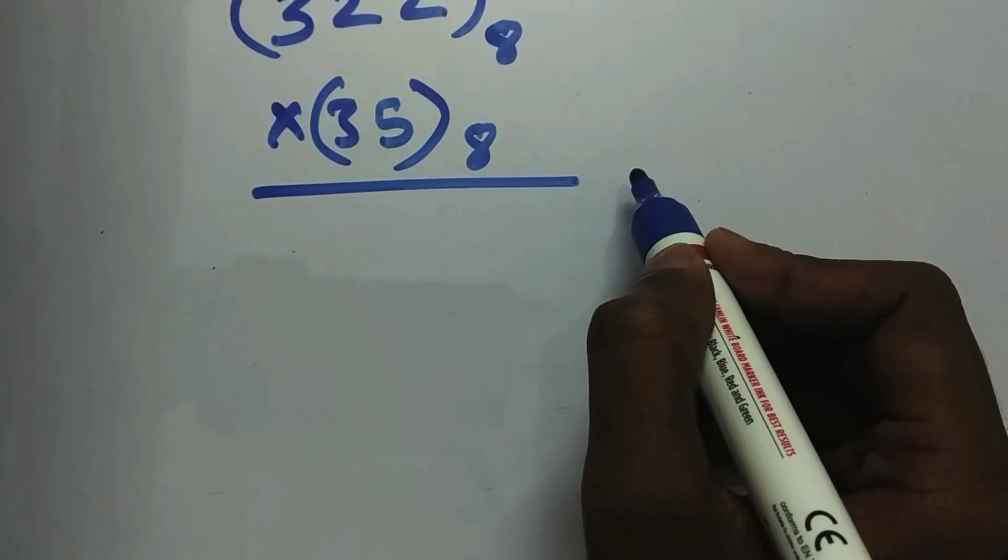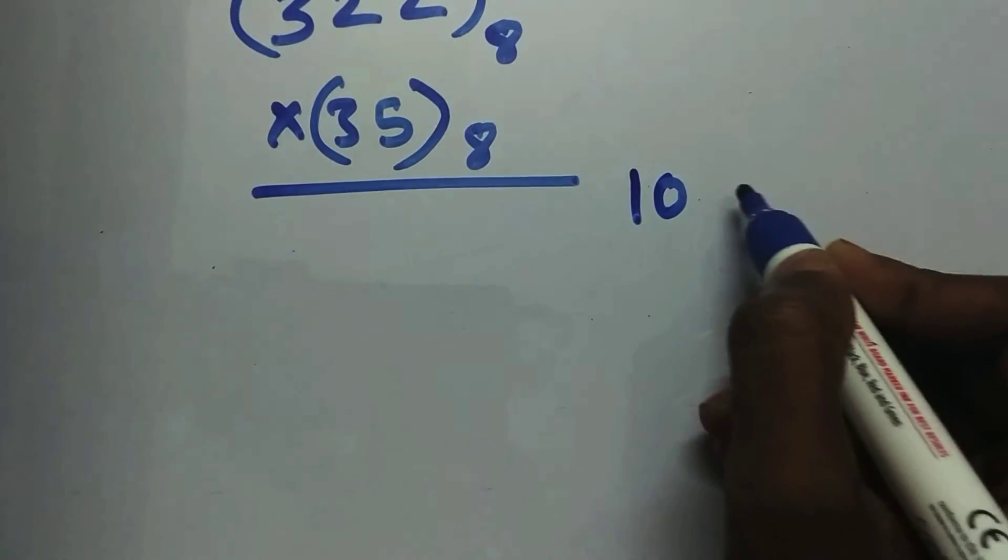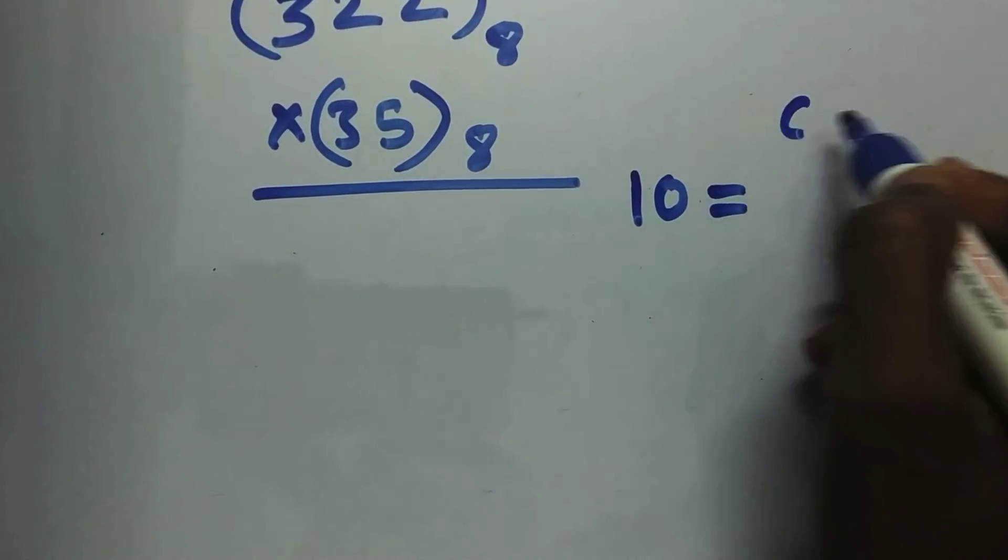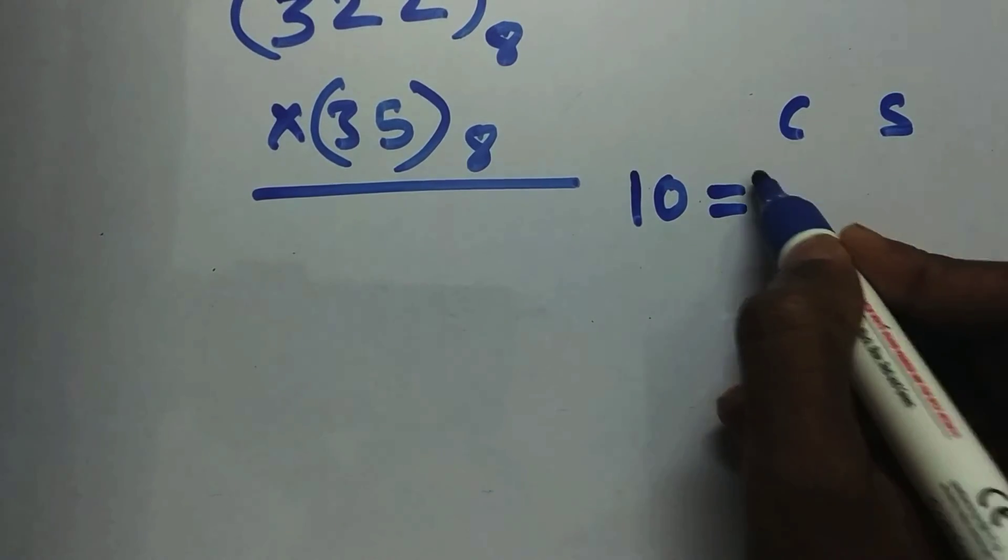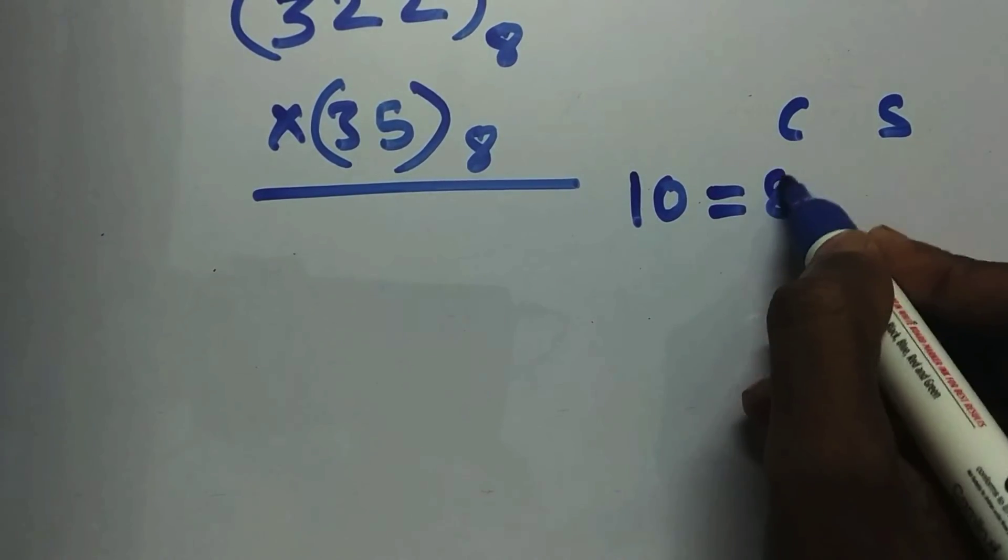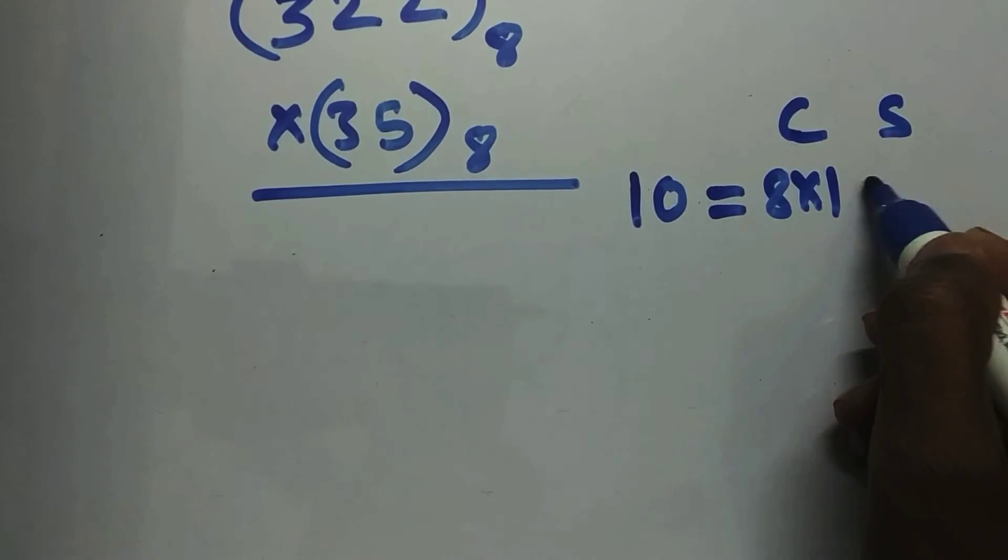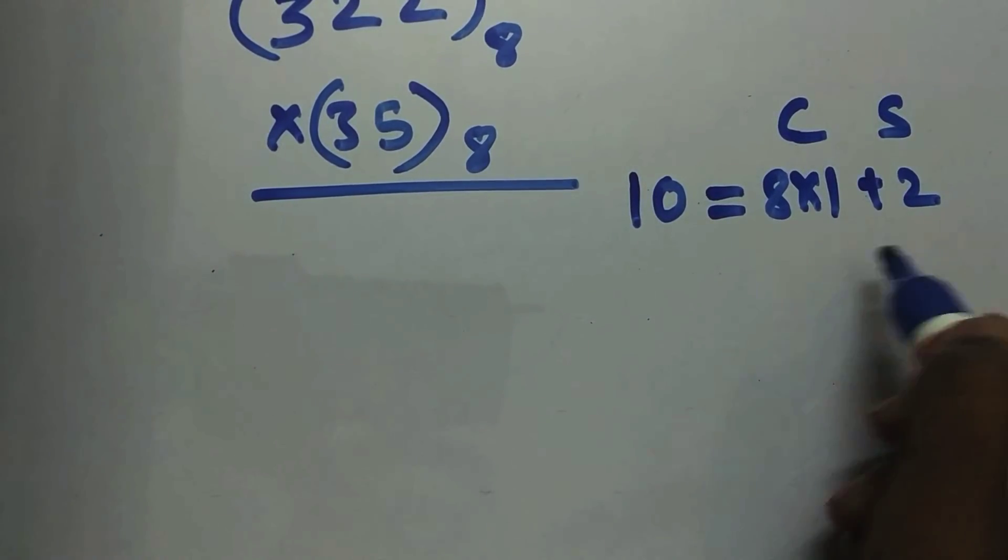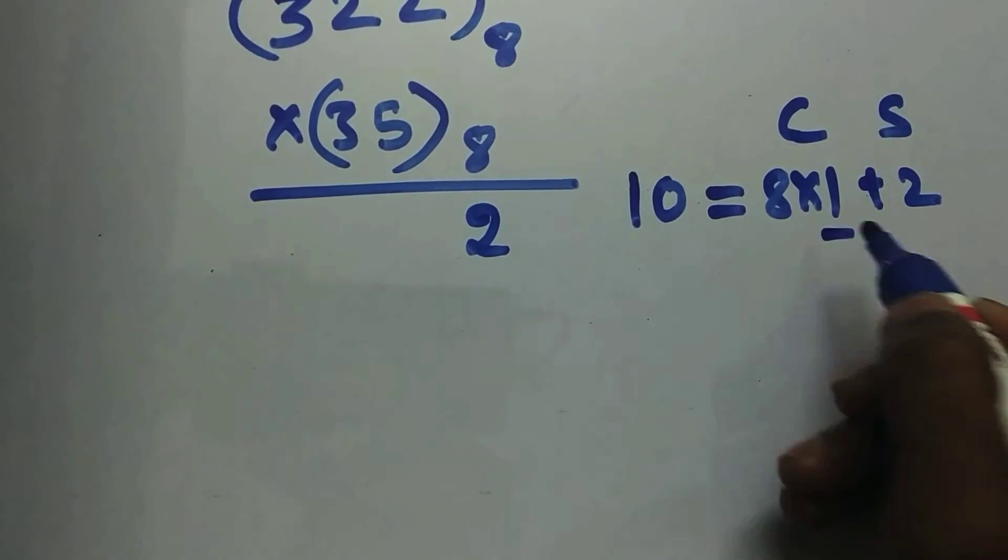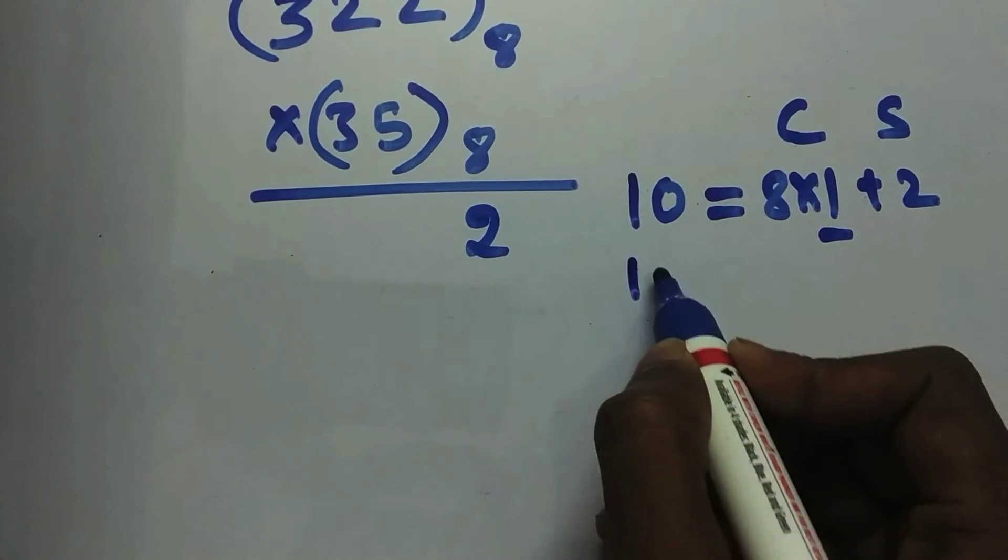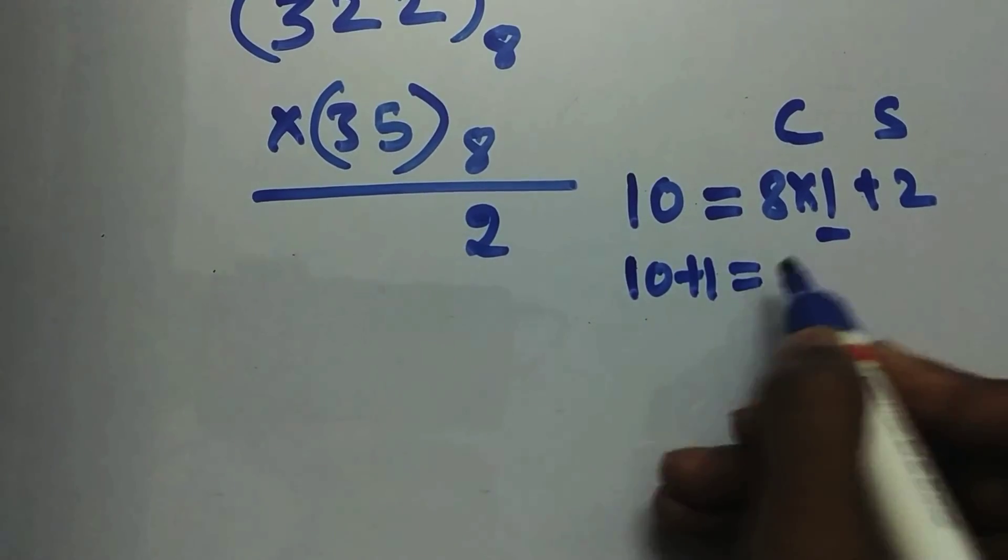First multiply in decimal and then convert into octal. So 5 into 2 is 10. So 10 can be represented in octal. Don't forget carry and sum, which will be helpful for you if you don't want to make mistakes. 8 into 1 is 8 plus 2, so carry is 1 and sum is 2. Sum is 2 over here, so carry is 1 which will be added for the next product. 5 into 2 is 10 plus 1, it's 11.